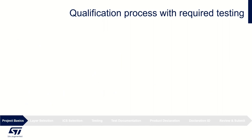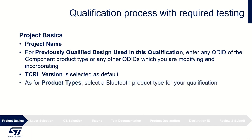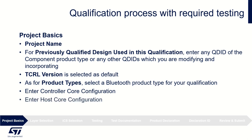Similarly, as for the process with no required testing, a couple of project basics are needed here. For project name, fill in a name for your project. For previously qualified design used in the qualification, enter any qualified design IDs of the component product type or any other QD IDs which you are modifying and incorporating into your project. For the TCRL version, the default is selected. For product types, choose the Bluetooth product type for your qualification. If applicable, enter controller core configuration and host core configuration.